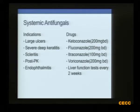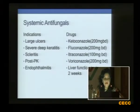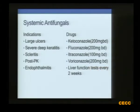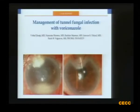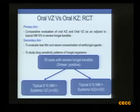In cases of large ulcers with more than two-thirds stromal involvement or more than 6 mm in diameter, you start systemic antifungal agents — either ketoconazole or voriconazole at 200 mg BD — with liver function tests done every two weeks. Here is a case of Fusarium keratitis that responded to topical natamycin and systemic ketoconazole, and another case of tunnel keratitis that responded to topical voriconazole and systemic voriconazole.